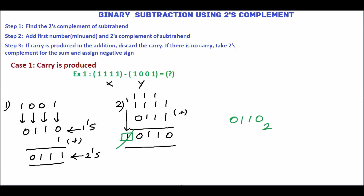X is equivalent to 15. Y is equivalent to 1, 2, 4, 8 which is 9. So the answer should be 15 minus 9 is 6. We will check this: 0, 1, 1, 0 is equivalent to 6. So 0, 1, 1, 0 base 2 is correct.